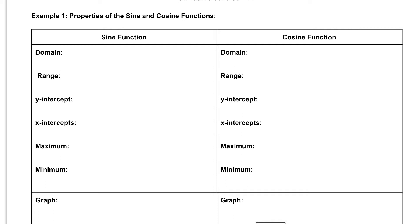In section 4.4 we're going to talk about the graphs of sine and cosine functions. In example 1 we're going to talk about the properties of these two functions, starting with the sine graph.